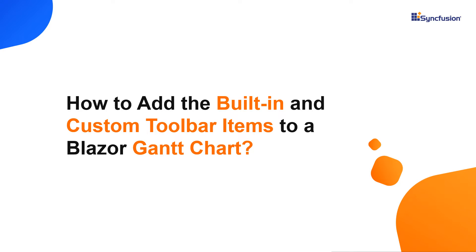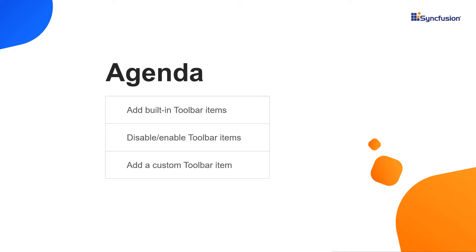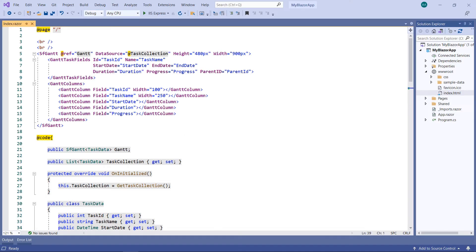Hi everyone. Welcome to this video on how to add the built-in and custom toolbar items to a Syncfusion Blazor Gantt chart in a Blazor WebAssembly app. In this video, I will show you how to add a few built-in toolbar items, enable and disable toolbar items at runtime. Also, I will show you how to add a custom toolbar item in the Gantt chart. Let's dive right in.